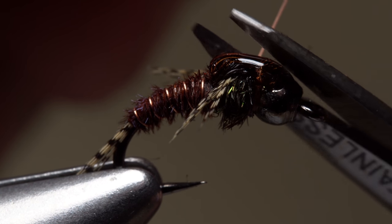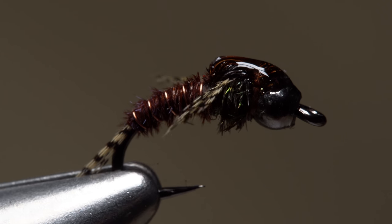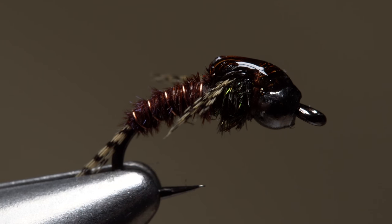Even though you didn't whip finish, you can now snip your tying thread off close, knowing the resin will keep it from unraveling. And that's the DPD Nymph. It's a great early season pattern that gets to where the fish are quick.